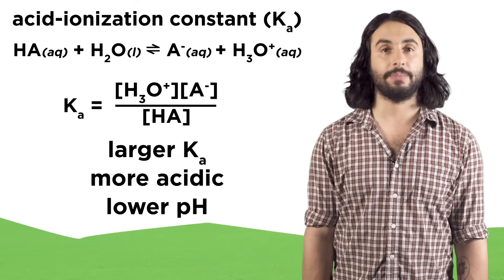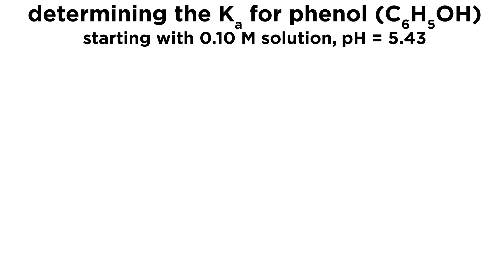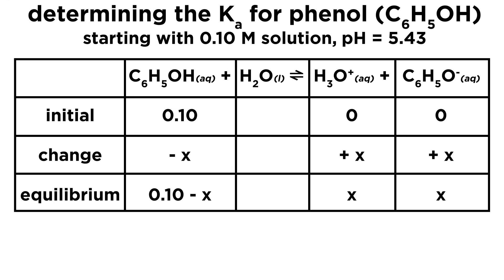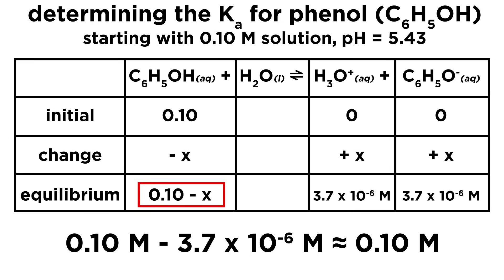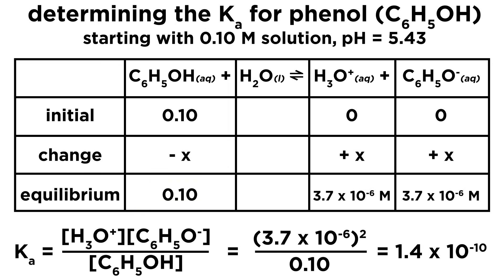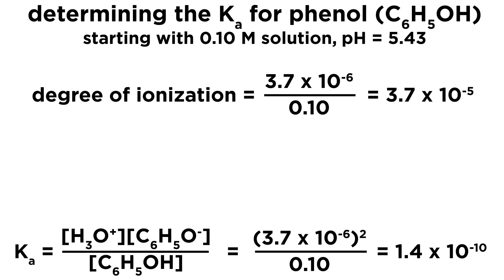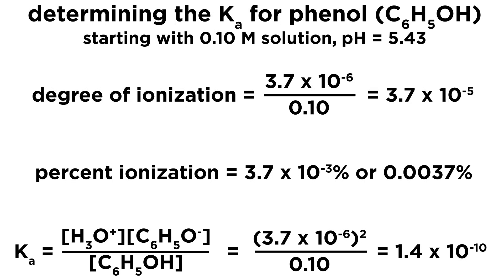We can determine Ka experimentally. Let's say we want to know the Ka for a weak acid like phenol. We can set up an ICE box just like the kind we already know. We can use the pH to calculate hydronium concentration, and therefore also the concentration of the conjugate base, since they are the same. The change in initial concentration of the acid is so small that it's negligible, and we treat things as though none got used up. Plug these values into the expression and solve for Ka. From this information we can also calculate the degree of ionization — the ratio of ionized to unionized acid molecules in solution — or the percent ionization, which is the same thing expressed as a percentage.